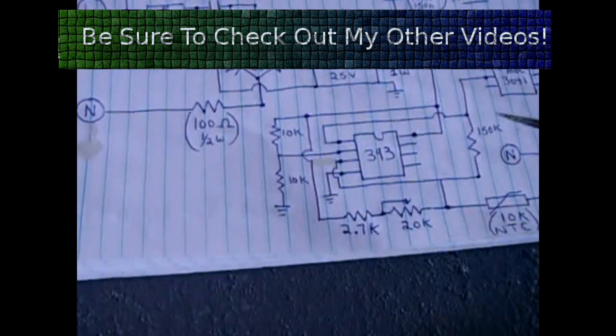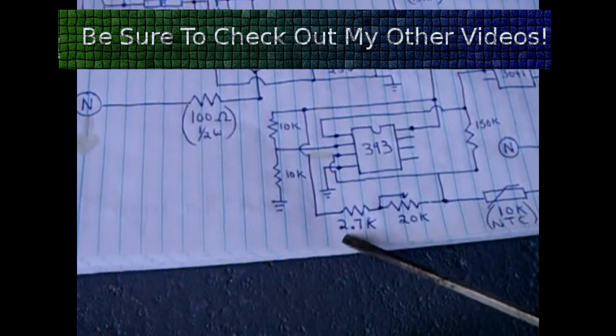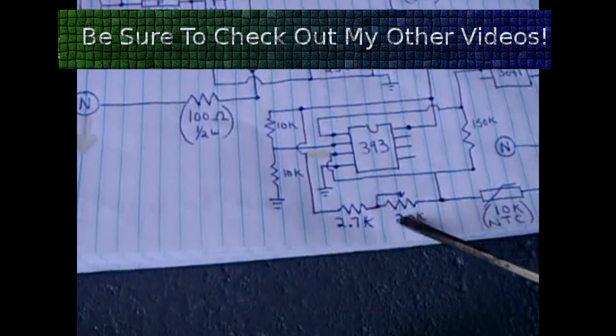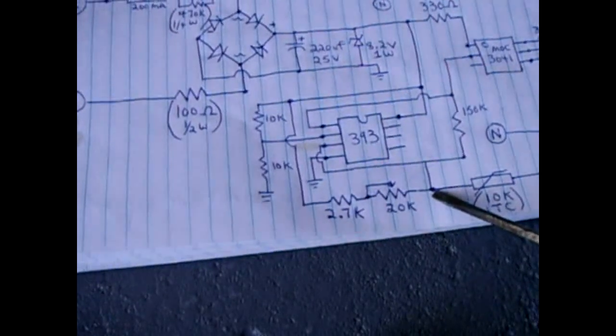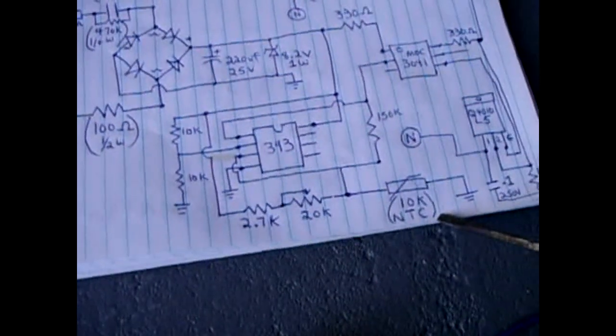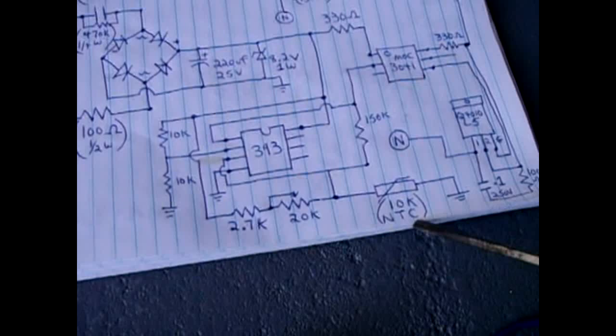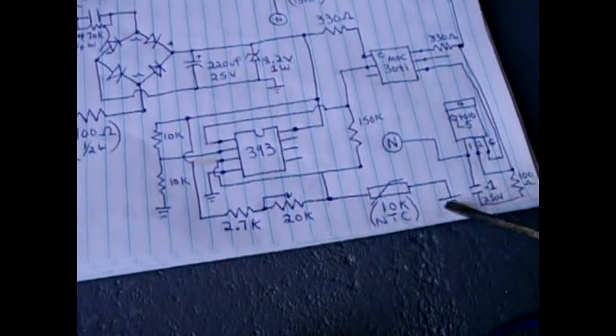Also connected to the power supply rail is another voltage divider that's made up of a 2.7K resistor in series with a 20K potentiometer. After the potentiometer that ties into a 10K NTC negative temperature coefficient thermistor and that goes to ground.